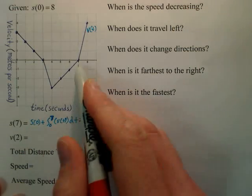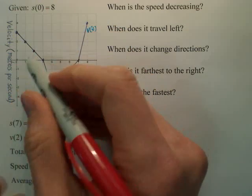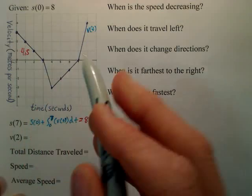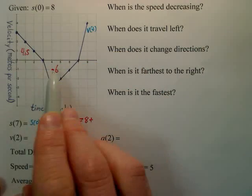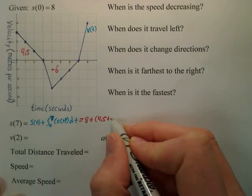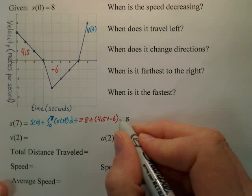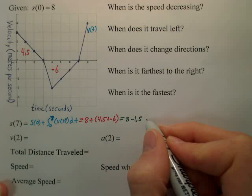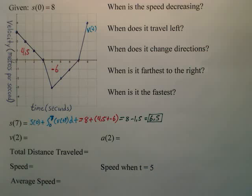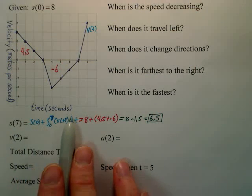S sub 0 is 8, plus the area from 0 to 7. The area of the first triangle is 3 wide and 3 high: 3 times 3 divided by 2 is 4.5, positive. The next part is 4 wide and 3 high: 4 times 3 is 12, divided by 2 is 6 — but it's negative because it's below the x-axis. So the area from 0 to 7 is 4.5 plus negative 6, which is negative 1.5. So it would be 8 minus 1.5, and your position at time 7 seconds is 6.5.